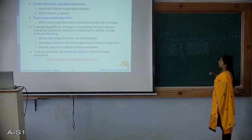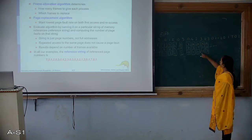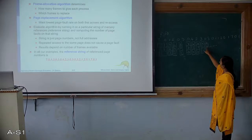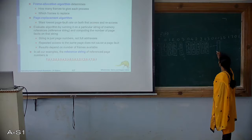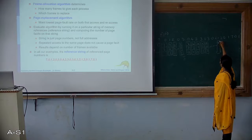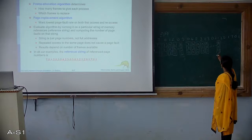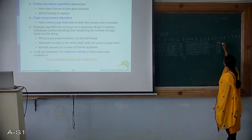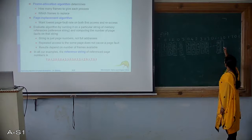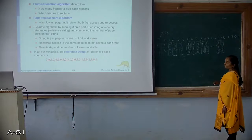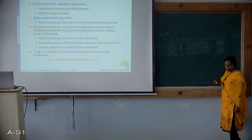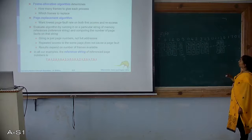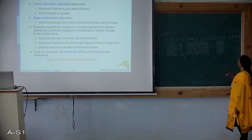1 is required and is not in the frame set. Who is the oldest? 3 has come twice, 2 has come twice, and 0 has come once — so 2 is the oldest. Remove 2. Frames now hold 0, 1 and 3. Now 2 is again required — replace the oldest page, which is 3, with 2. Then 0 is needed — 0 is present. 1 is needed — 1 is present. No page replacement is required for 0 and 1 because they are already present in the frame.